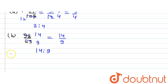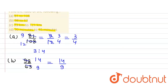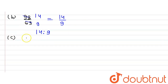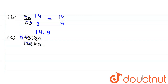Now let's move to Part C. In Part C, we have 33 km to 121 km. So 33 km divided by 121 km — the km cancels out. Dividing by 11: 11 multiplied by 3 is 33, and 11 multiplied by 11 is 121, so this equals 3 divided by 11, and the ratio is 3 ratio 11.